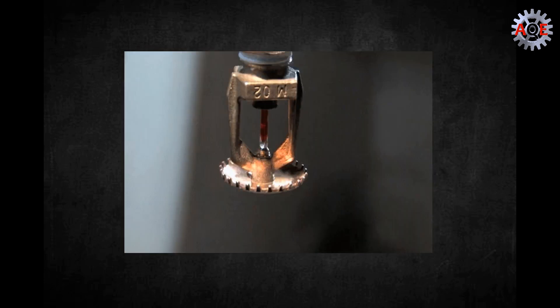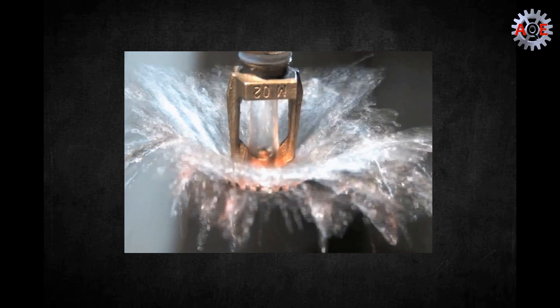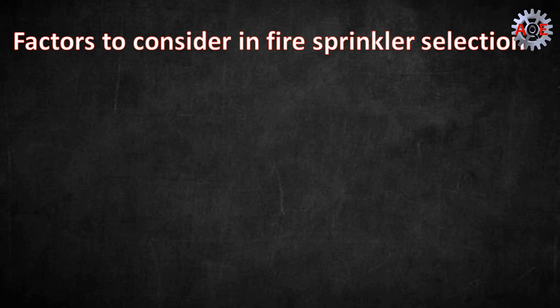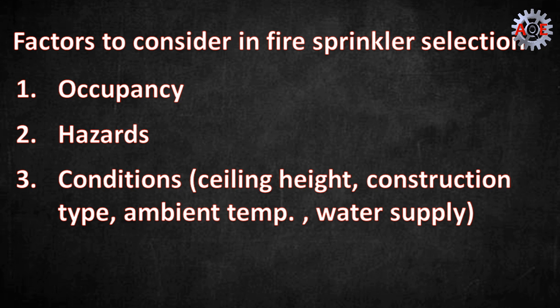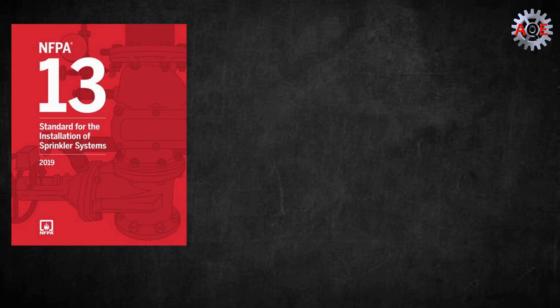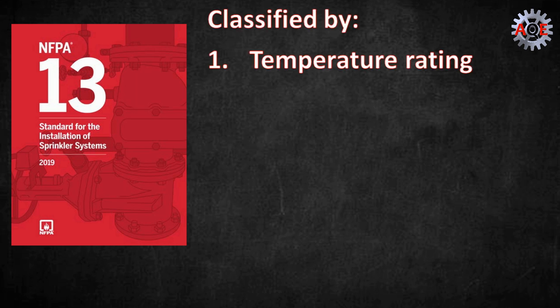Choosing the right fire sprinkler is critical to the success of a sprinkler system in controlling or extinguishing a fire. Sprinklers should be chosen by evaluating occupancy hazards and conditions, ceiling height, type of construction, ambient temperature, available water supply, and more. Sprinklers are classified by NFPA 13 standard for the installation of sprinkler systems in several ways, including temperature rating, K-factor, orientation, response type, design and performance characteristics, and special service conditions.